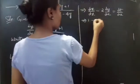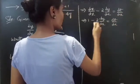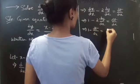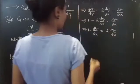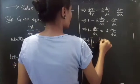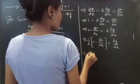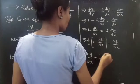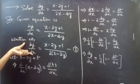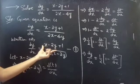So 1 minus 2(dy/dx) equals dt/dx. Rearranging, 1 minus dt/dx equals 2(dy/dx), giving dy/dx equals (1/2)(1 minus dt/dx). We can now replace dy/dx with (1/2)(1 minus dt/dx) in equation 1, and replace x minus 2y with t.